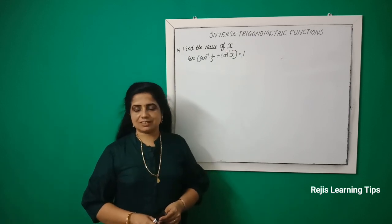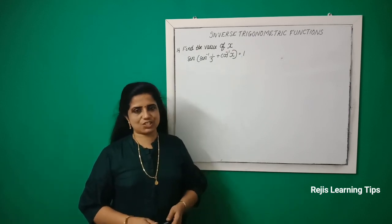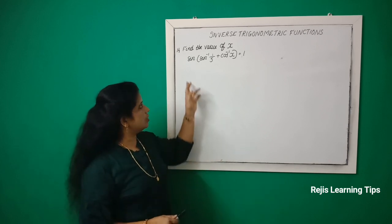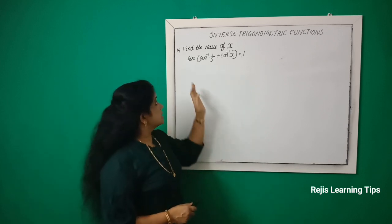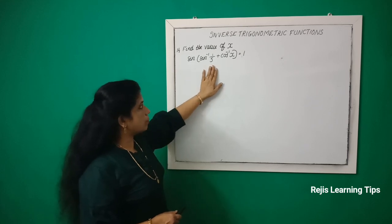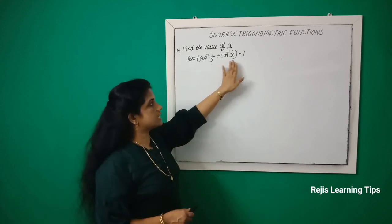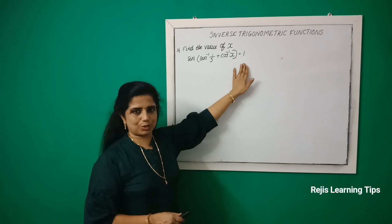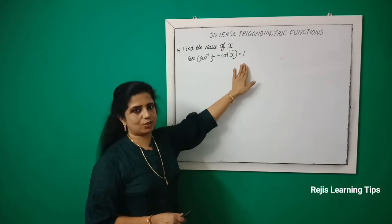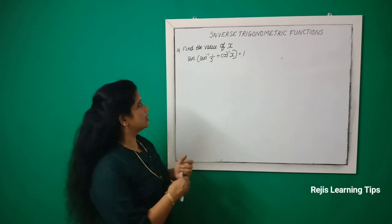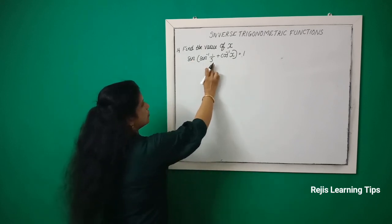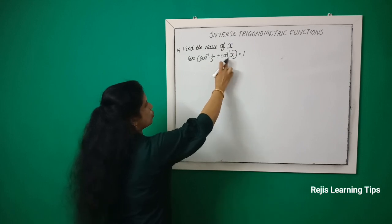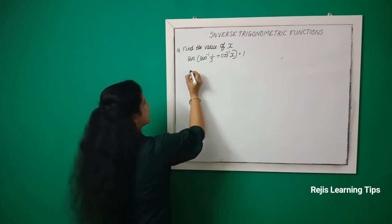Question 13: Find the value of x. sin(sin⁻¹(1/5) + cos⁻¹x) = 1. This question is straightforward. We have sin(sin⁻¹(1/5) + cos⁻¹x) = 1.